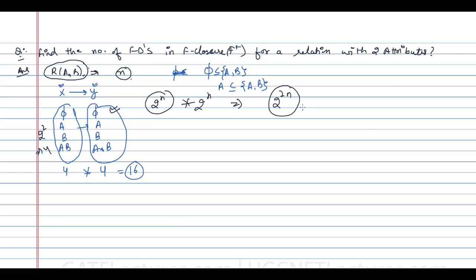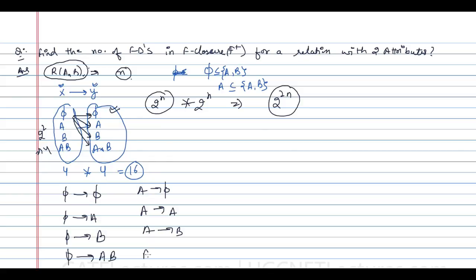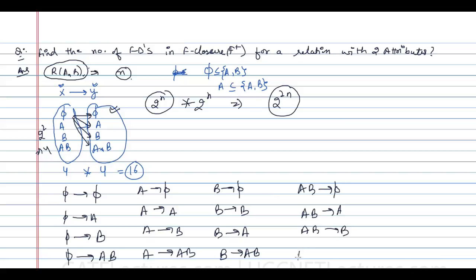Enumerating all 16 functional dependencies for R(A, B): phi→phi, phi→A, phi→B, phi→AB; A→phi, A→A, A→B, A→AB; B→phi, B→A, B→B, B→AB; AB→phi, AB→A, AB→B, AB→AB. So F+ for a 2-attribute relation contains exactly 16 functional dependencies.